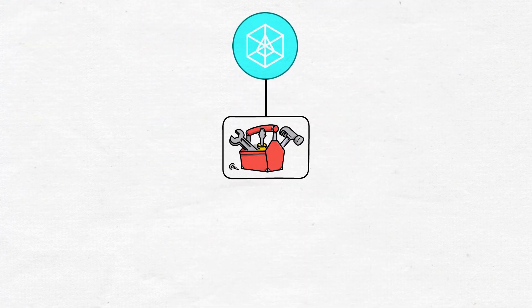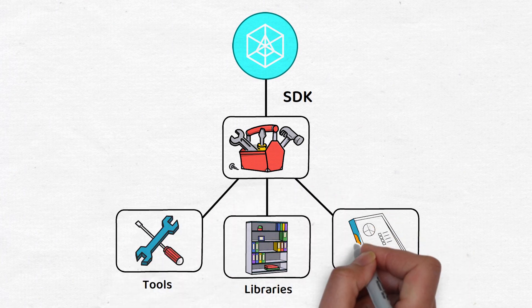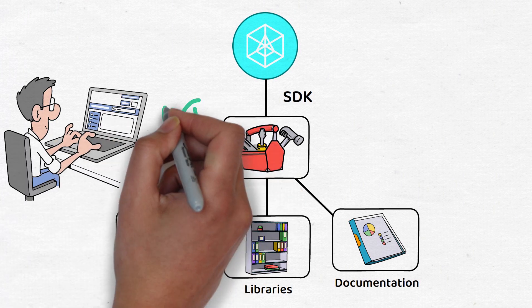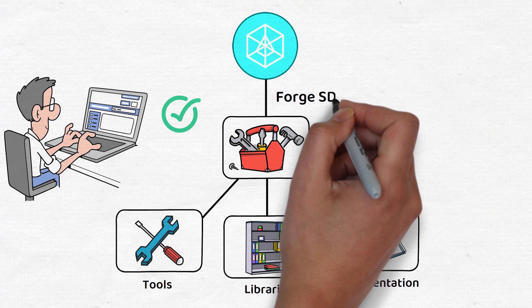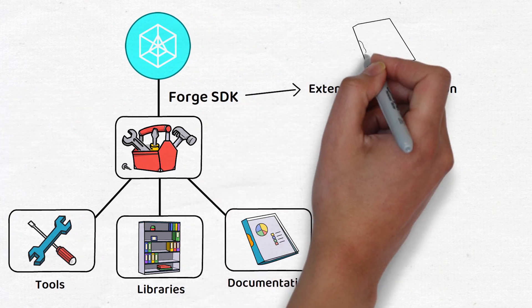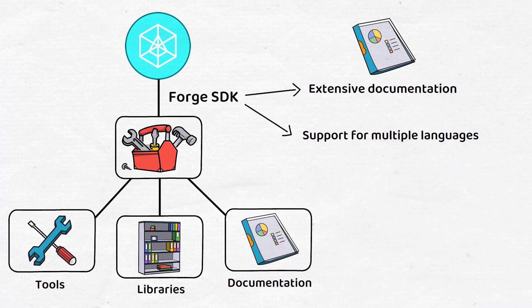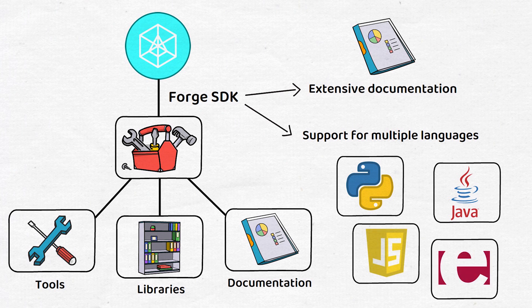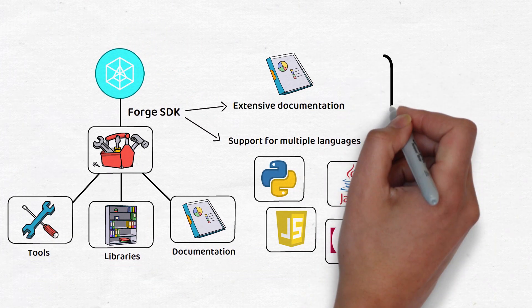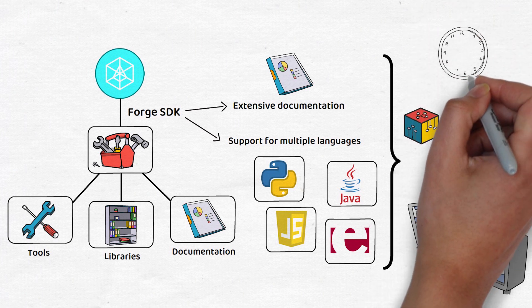ArcBlock provides software development kits, which usually include pre-built tools, libraries, and documentation to ensure developers can get moving as soon as possible with their products. ArcBlock's SDK is known as the Forge SDK, and its biggest advantage over Cosmos is the extensive documentation and support for multiple languages such as Python, Java, JavaScript, Erlang, and so on. ArcBlock claims their SDK can help developers build and deploy their first decentralized application in minutes.